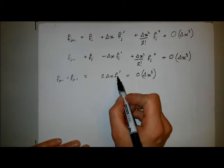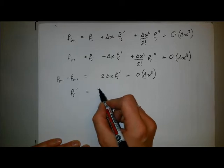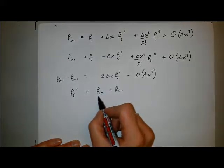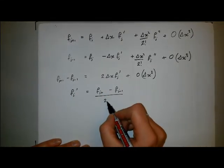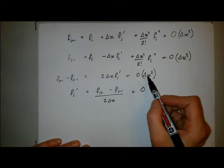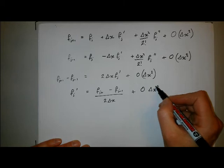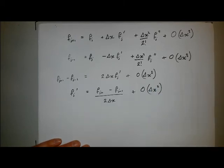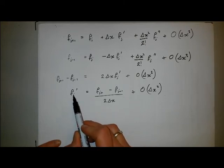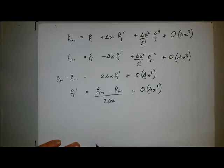So I'll rearrange this to find f'_j. f'_j equals f_{j+1} - f_{j-1}, took the 2 delta x over to the other side, plus order, so now I divide this by delta x so that goes to order delta x squared and the constant of proportionality changes. So this is now my finite difference formula for the gradient at f_j, that's f'_j, using the surrounding points.